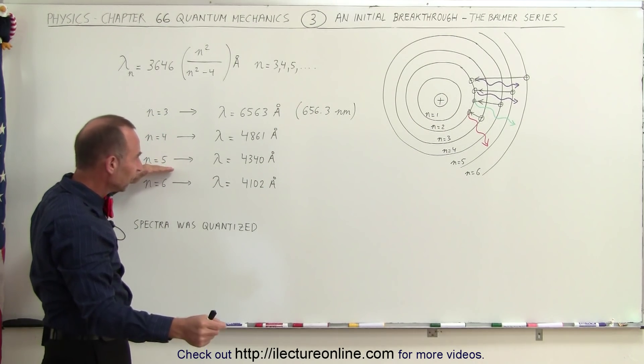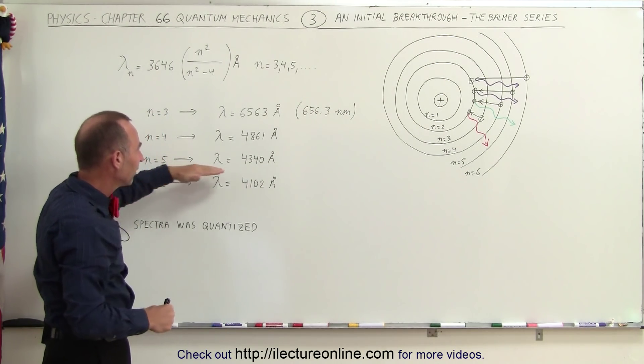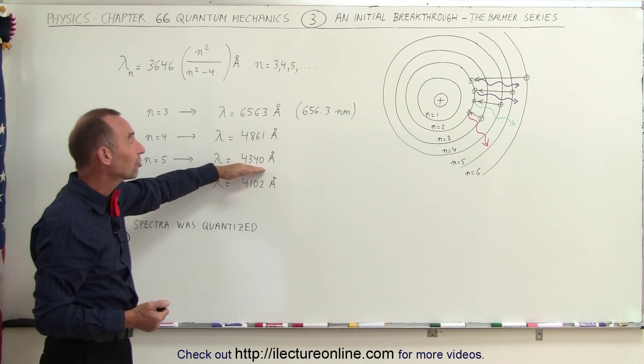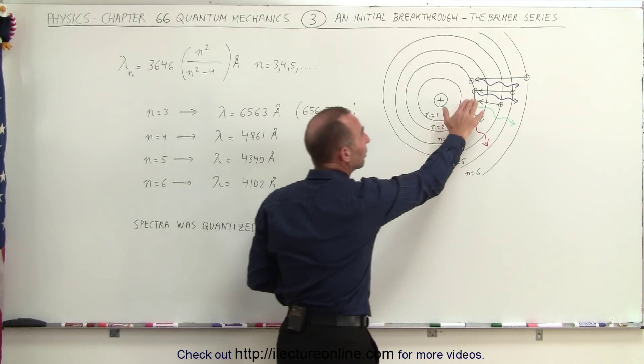When an electron jumped from the fifth level down to the second level, the wavelength emitted, or the photon emitted, had a wavelength of 4340 angstroms, which was a light that was more in the purple color.